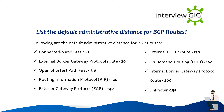List the default administrative distance for BGP routes. Following are the default administrative distances: Connected 0, Static 1, External Border Gateway Protocol Route 20, Open Shortest Path First 110, External IGP Route 170, Internal Border Gateway Protocol Route 200, Unknown 255.